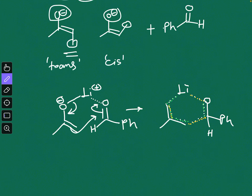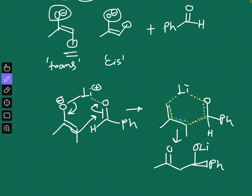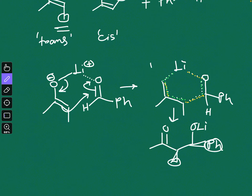After the transition state you get the product — the aldol. Now here you have the question of stereochemistry. If you have a methyl group here, the question is whether this methyl and this phenyl are on the same side or on the opposite side. That is the basic concept — the six-membered transition state.